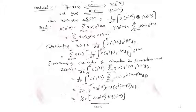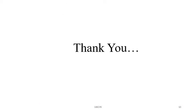There are some other properties of DTFT as well, like symmetry, scaling, and summation properties, but the convolution, time shifting, frequency shifting, and frequency differentiation properties are the most important. These are also mentioned in the model question paper. Thank you.